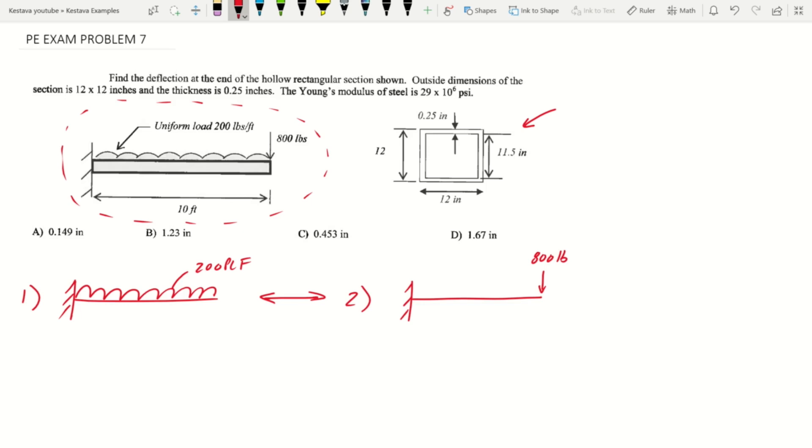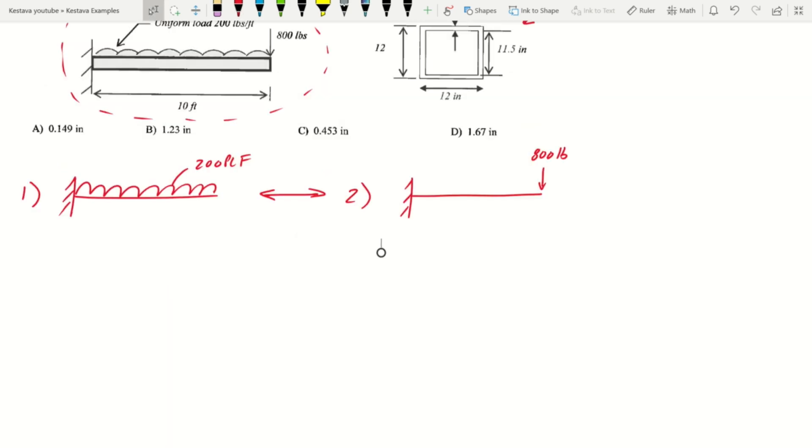For a distributed load on a cantilevered member, the deflection max criteria is equal to wL to the fourth over 8EI. For a point load at the end of a cantilever, max deflection equation is given by PL cubed over 3EI.